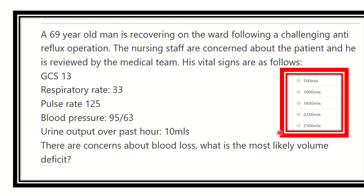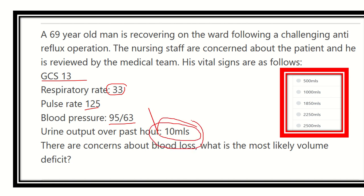So we have to find out the blood loss according to this scenario. We have important parameters: GCS 13, respiratory rate 33, pulse rate 125, blood pressure 95 over 63, and urine output in the last hour 10 ml. Among these parameters, the most important parameter is urine output.